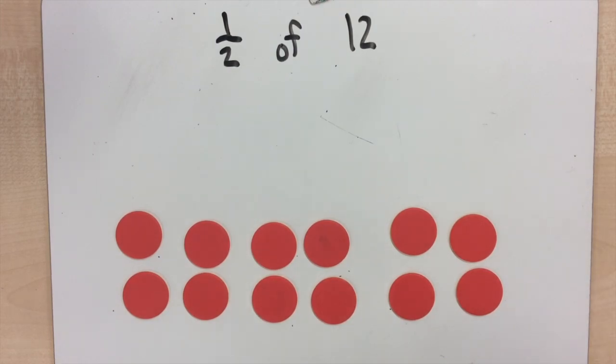If I need to find a fraction of a number, that means I need to put that number into smaller groups. These groups need to be the same size. If I'm looking for half, it means that we have two groups, two groups of equal size.